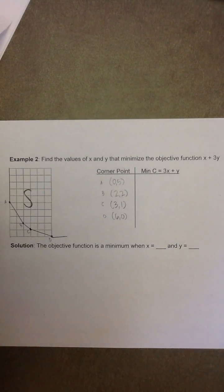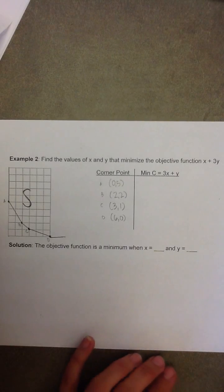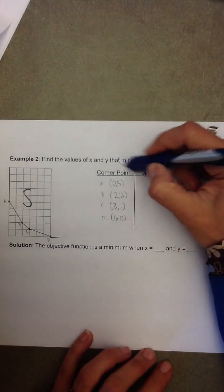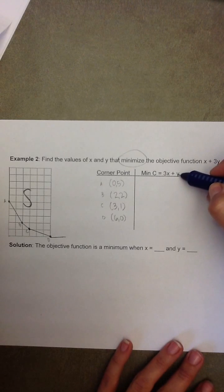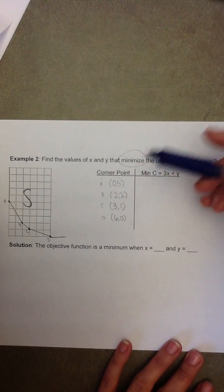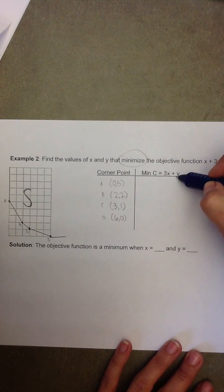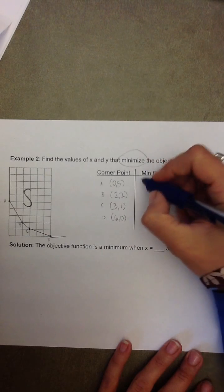So, now once we've found all of our corner points, we need to plug those into our objective function to find which gives us the optimal value. And in this case, the optimal value is going to be a minimum. So, in the objective function, we need to replace the x and y values of our ordered pairs into the objective function.